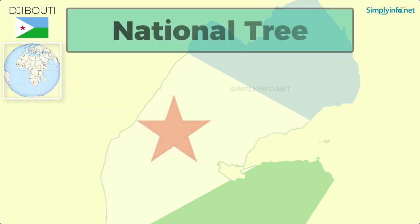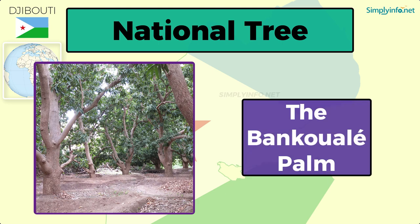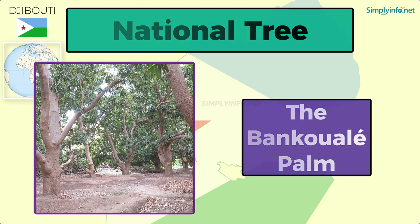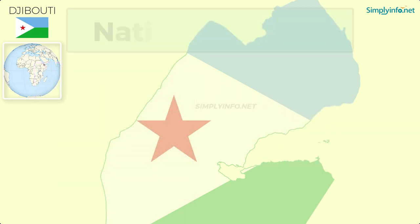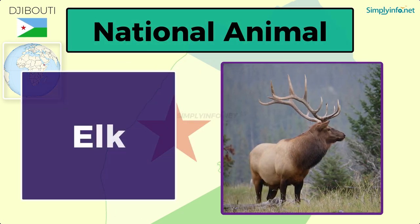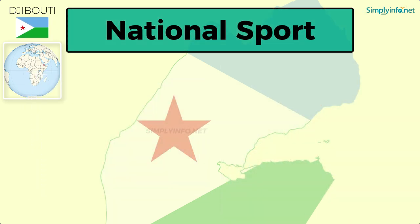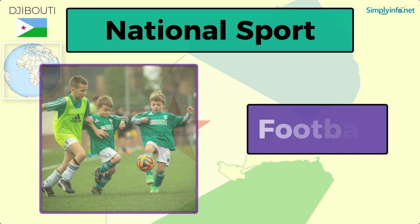National tree: the Bangkole palm. National animal: elk, also called the Wapiti. National sport: football.